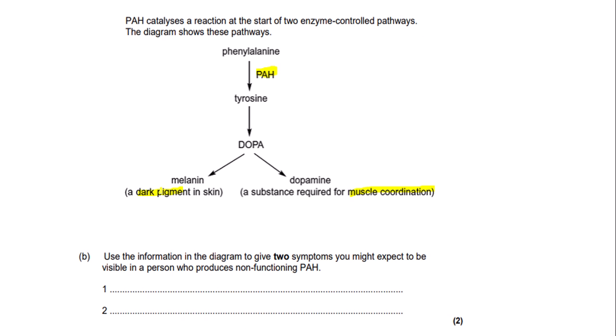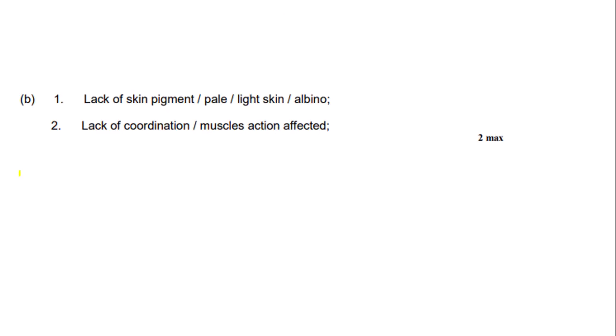Looking at melanin: melanin is a dark pigment in skin, but if its production is blocked, this can lead to a pale skin colour or a lack of skin pigment — so one symptom might be pale skin. When PAH is non-functioning, dopamine production will also be blocked, and since dopamine is required for muscle coordination, a lack of dopamine leads to a lack of muscle coordination. The mark scheme confirms: first mark — lack of skin pigment or pale skin; second mark — lack of coordination or muscle action affected. We get both marks.